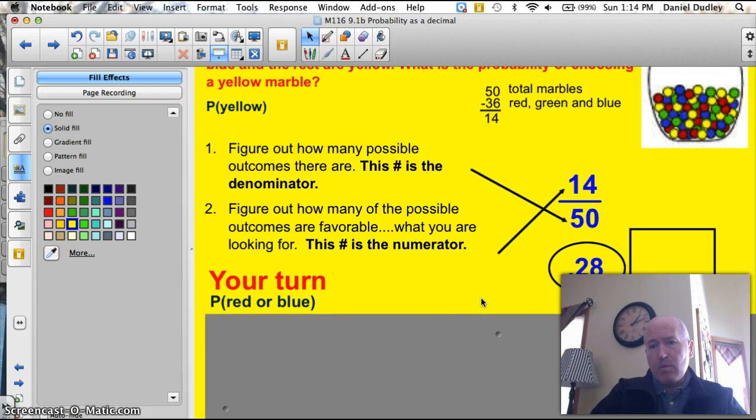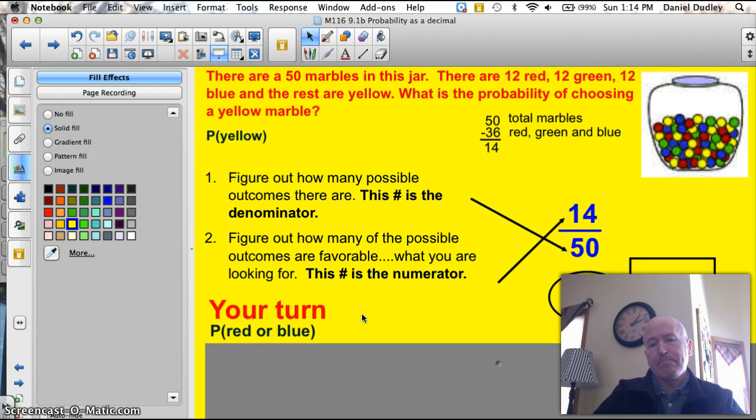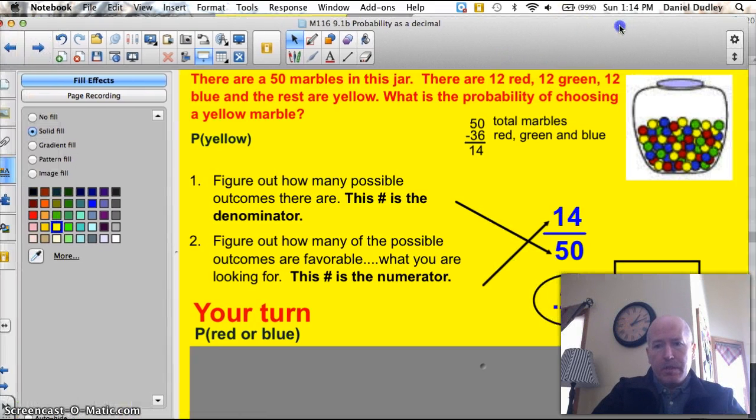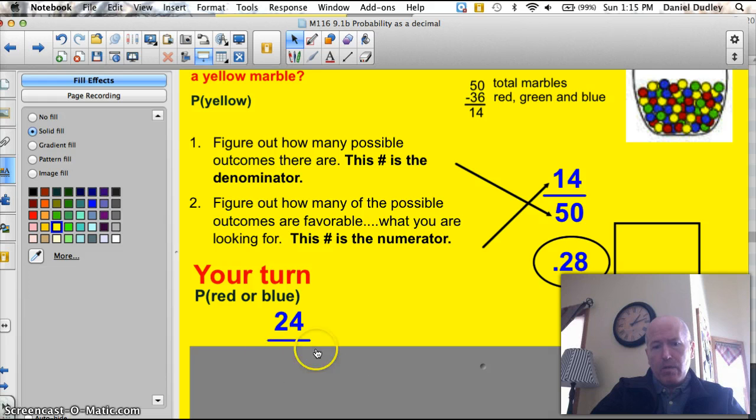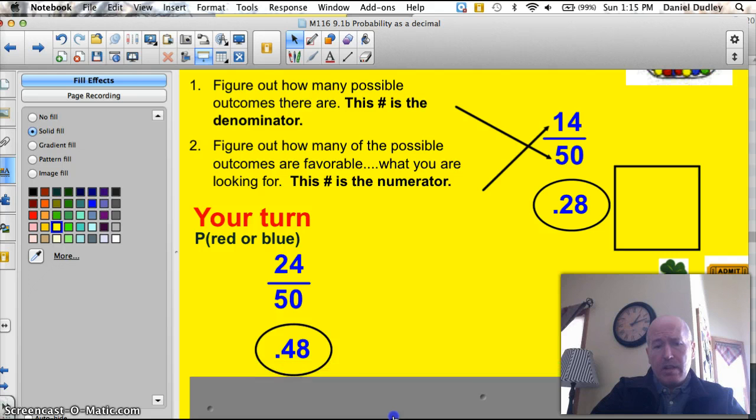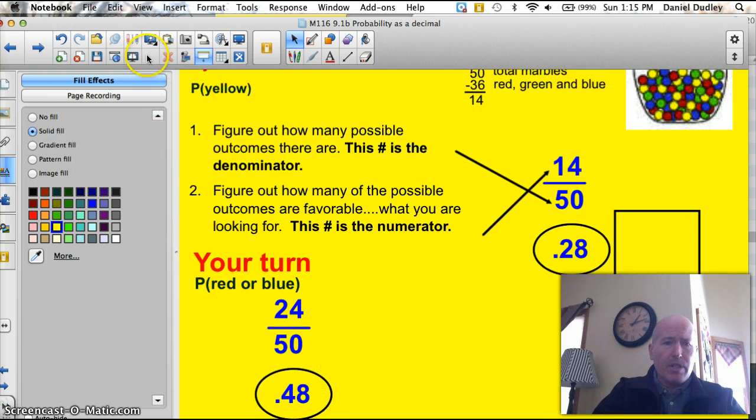Okay, your turn. Same question, same marble jar. What is the probability of getting a red or a blue marble when you choose? Let's see how you did. Well, there are 12 of each of that color. 12 red and 12 blue. So, there's a total of 24 out of possible 50 different marbles. So, 24 out of 50. But, that's not your answer. If you divide 24 divided by 50, you are going to get 0.48. So, you have a 0.48 chance of drawing out a red or a blue marble. All right, good job.